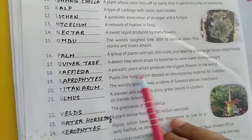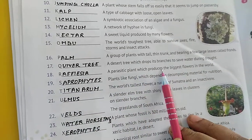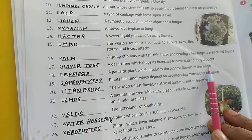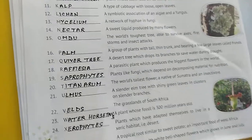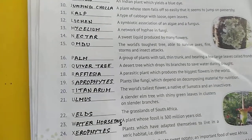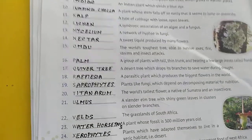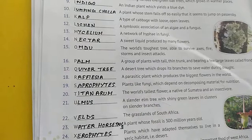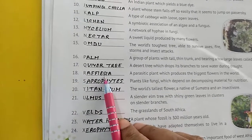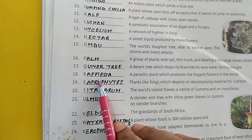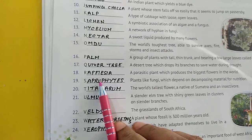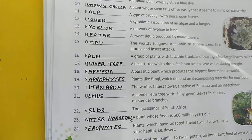Number eighteen: a parasitic plant which produces the biggest flower in the world — parasitic plant jisse ki world ka biggest flower produce hota hai. That is called Rafflesia.